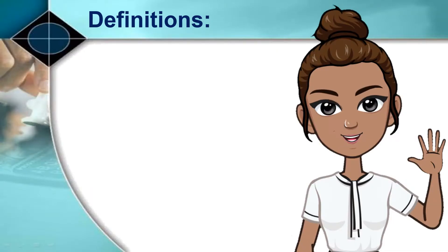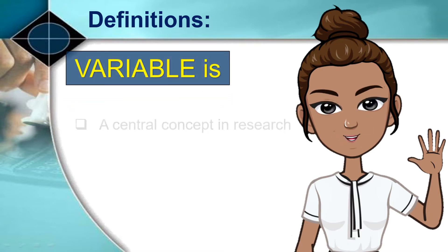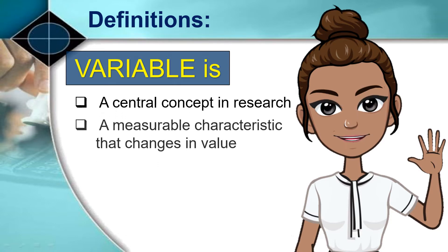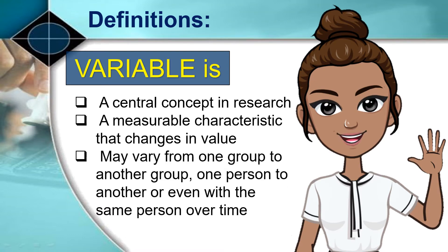One of the aspects of research is to describe and explain variables. A variable is a central concept in research. It is a measurable characteristic that changes in value. It may vary from one group to another group, one person to another, or even with the same person over time.